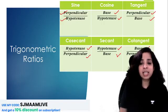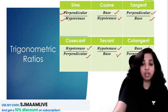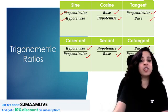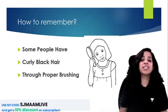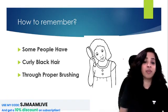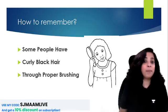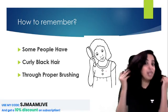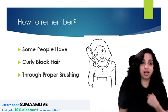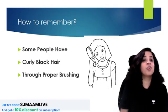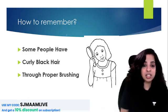During exams, students tend to forget these ratios and get confused. So after watching today's video, you will not be confused anymore, because here is an amazing trick for you. You just have to learn this sentence: 'Some People Have Curly Black Hair Through Proper Brushing.' If you know this, your problem gets solved.